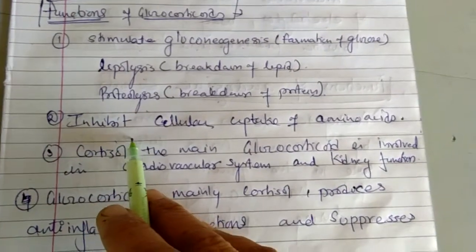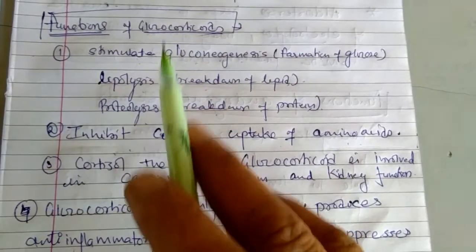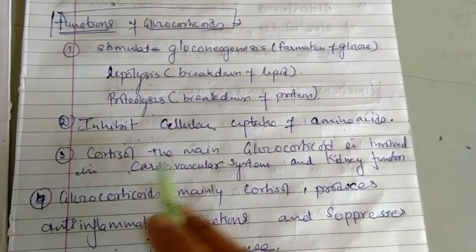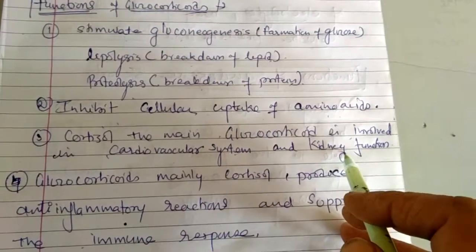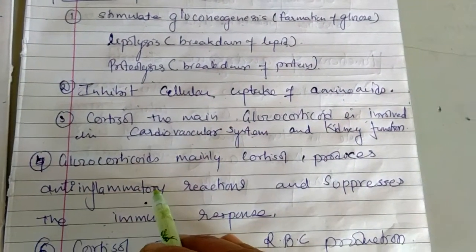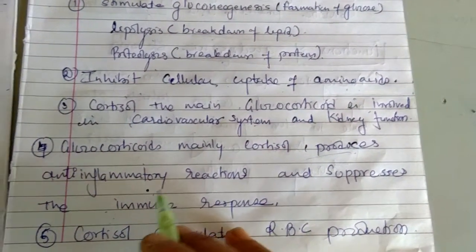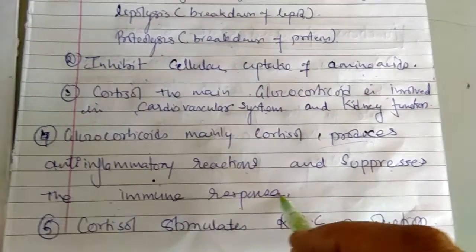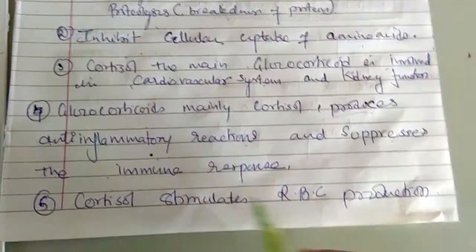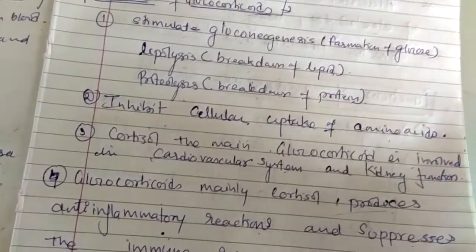Another function of glucocorticoids: they inhibit the cellular uptake of amino acids. Cortisol, which is the main glucocorticoid, is also involved in cardiovascular system function and kidney function. Glucocorticoids — mainly cortisol — also produce anti-inflammatory reactions and suppress the immune response. Our immune response is suppressed by glucocorticoids. Cortisol also stimulates RBC production.